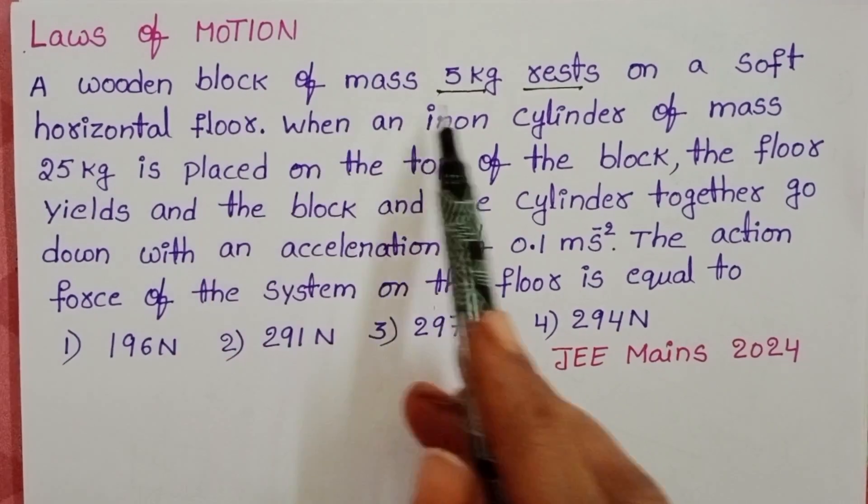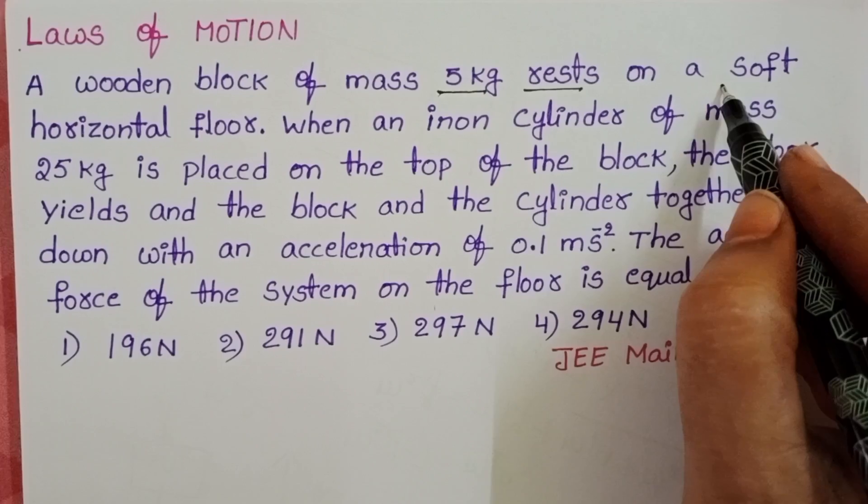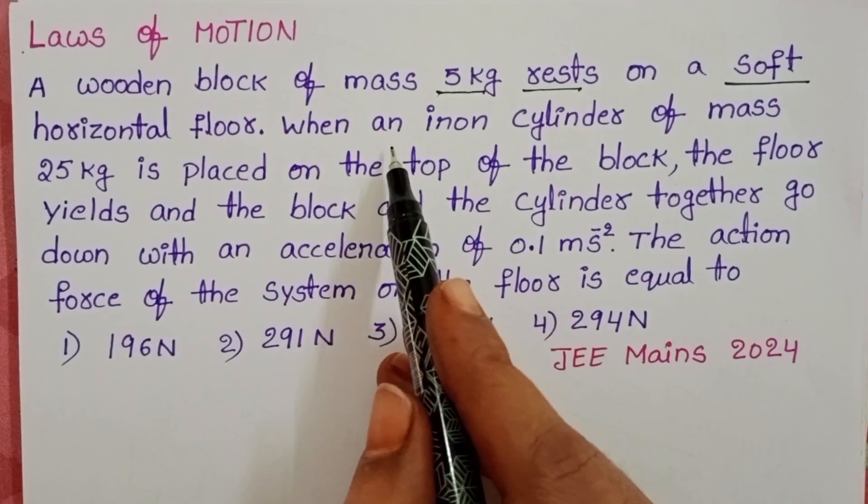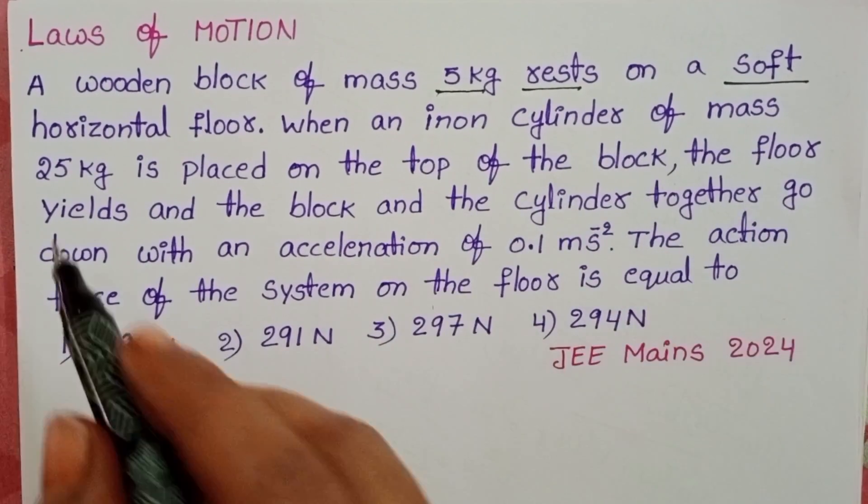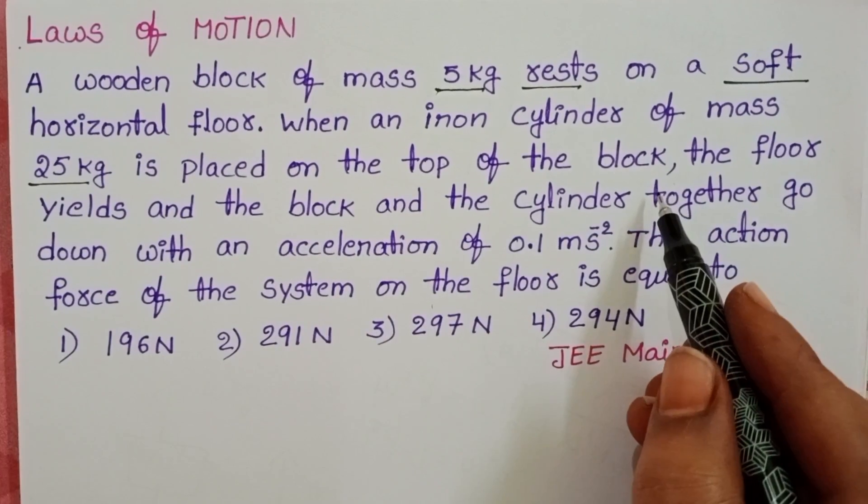A wooden block of mass 5 kg rests on a soft horizontal floor. When an iron cylinder of mass 25 kg is placed on top of the block...